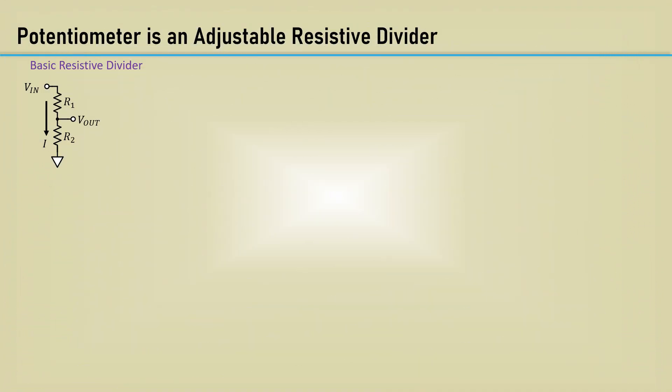A potentiometer is just an adjustable resistive divider. For those not familiar with the basic electronics theory of a voltage divider, I'll quickly review it and derive the voltage divider equation. The voltage divider can be any number of resistors across an electric potential. Shown here in its simplest case, the potential is from the input voltage VIN and ground. From Ohm's law, the voltage across R1 is the current I times the resistance of R1. The voltage across R2 is the current I times the resistance of R2.